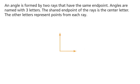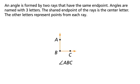An angle is formed by two rays that have the same endpoint. Angles are named with three letters. The shared endpoint of the rays is the center letter. The other letters represent points from each ray.